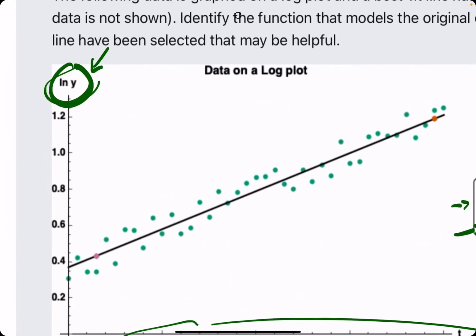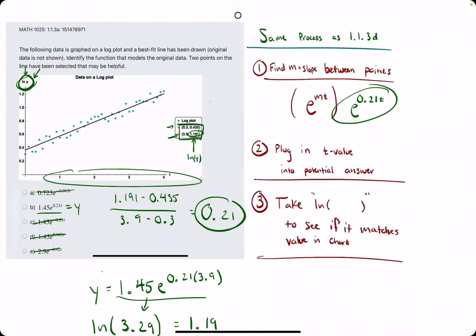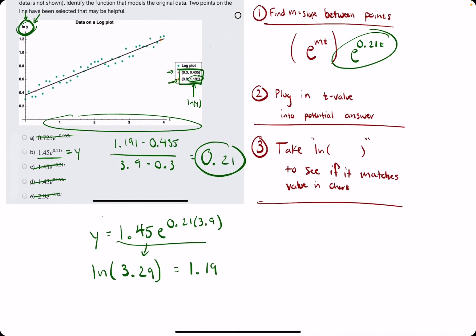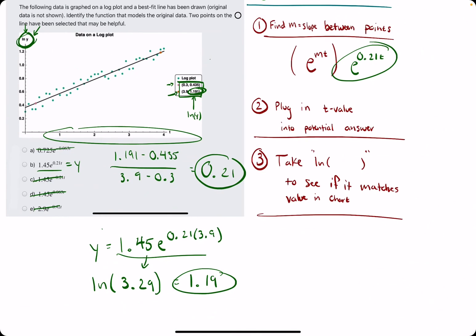which corresponds to the correct y value of this ordered pair. But that y value is actually an ln of y value, since it's a point on this function. Because 1.19 matched this 1.19, that's how we confirm that b is our answer.